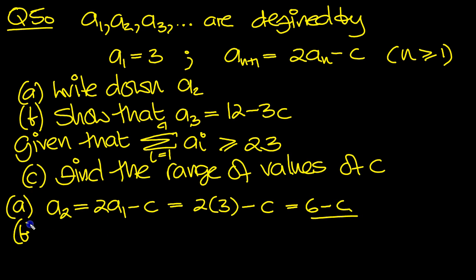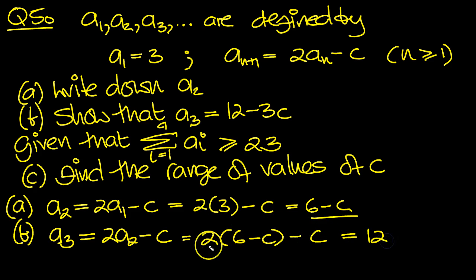Part b, show that a3 equals 12 minus 3c. Let's see, a3 is equal to 2a2, put n equals 2 in here. a3 is 2a2 minus c, which is 2 lots of the 6 minus c minus c. 2 times 6 is 12. So I've put the a2 here into here. 2 lots of this,